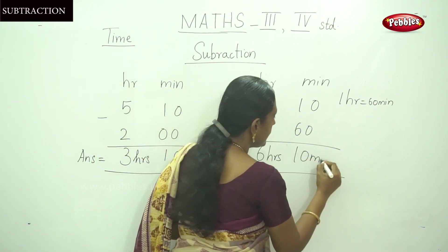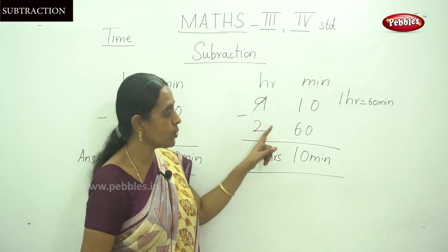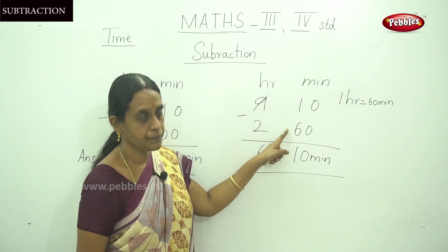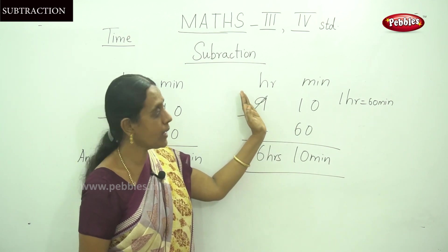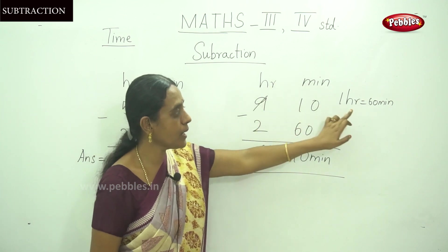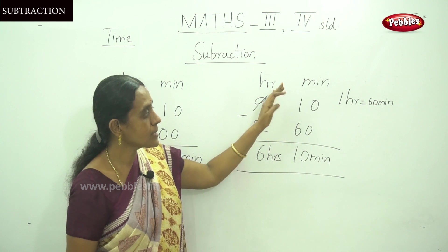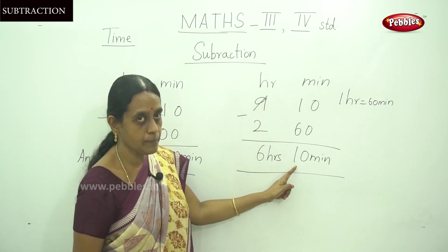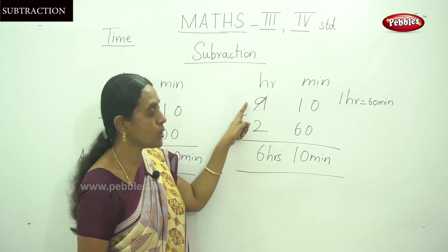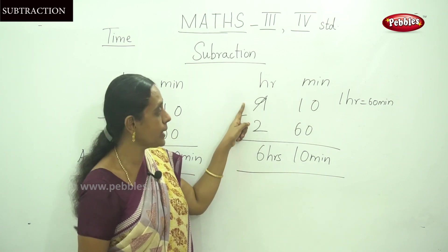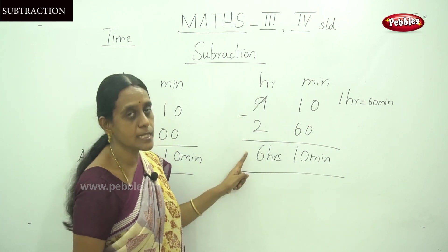You have to subtract 2 hours 60 minutes from 9 hours 10 minutes. The answer is 6 hours 10 minutes. Because you can't subtract 60 from 10, so borrow 1 hour from the hours. 1 hour is 60 minutes, so 60 plus 10 is 70. Then 70 minus 60 is 10 minutes. Borrow 1 from 9, making it 8, so 8 minus 2 is 6 hours.